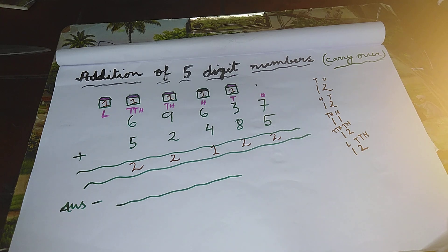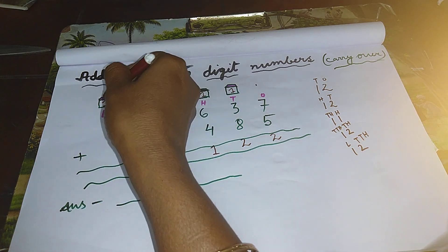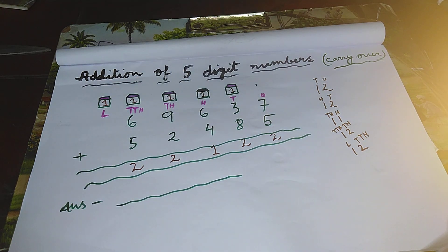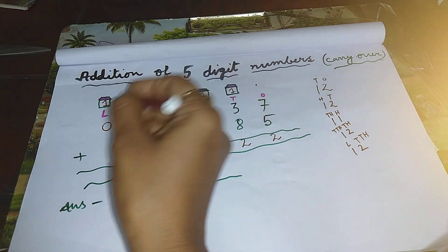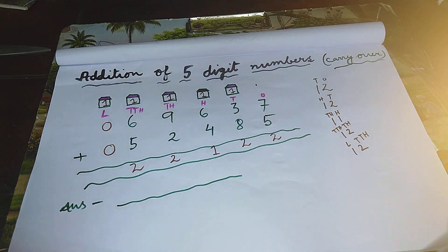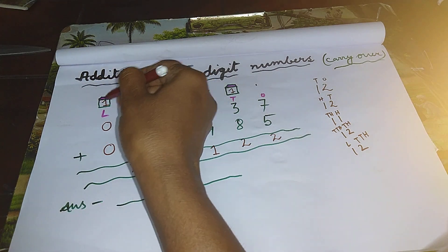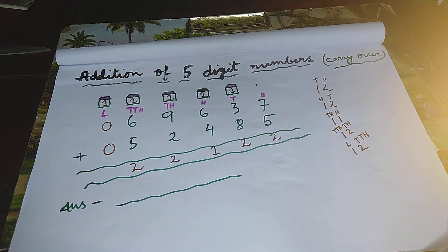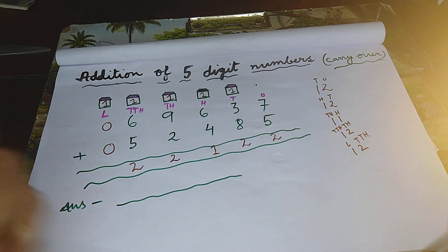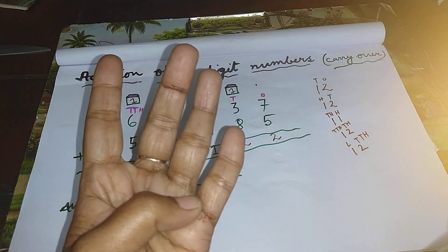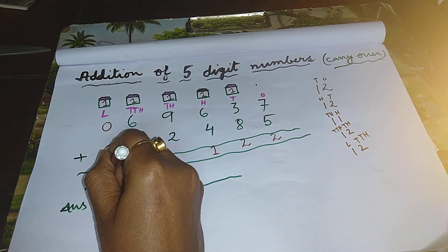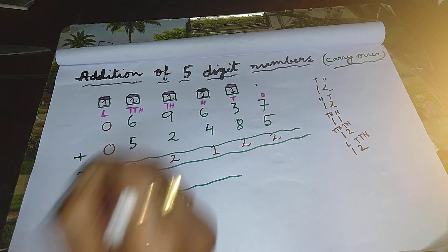Now, see children, in lakh's column there is no digit. So we can put zero over here. Now add all these digits that belong to lakh's place. The first digit is one — count one. Zero means nothing. So there will be one.